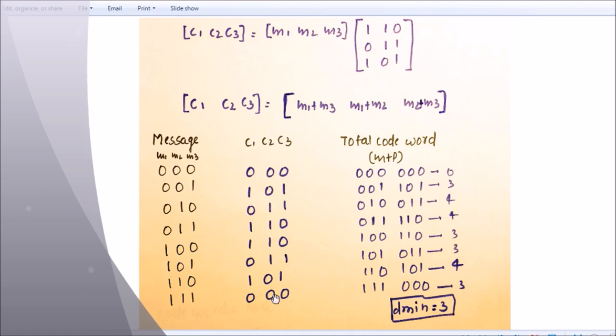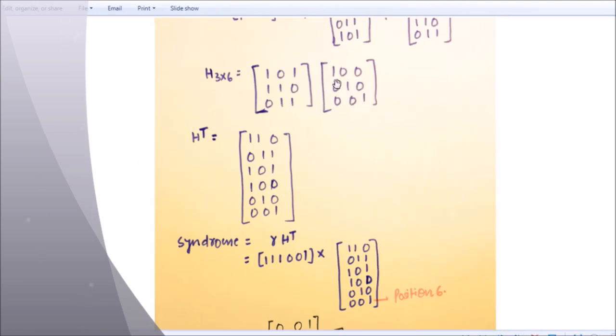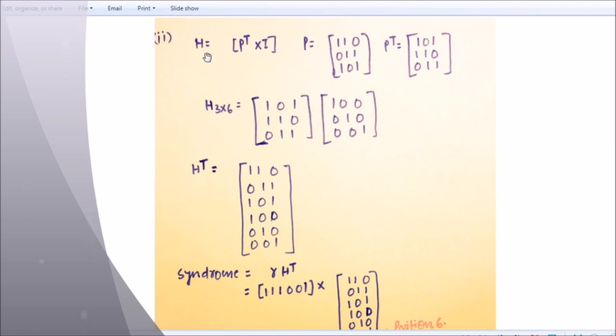Because we have eight codewords, so we are writing up to 8, 0 to 7. And then this is your total codeword. So d minimum equals 3. We got d minimum equals 3.